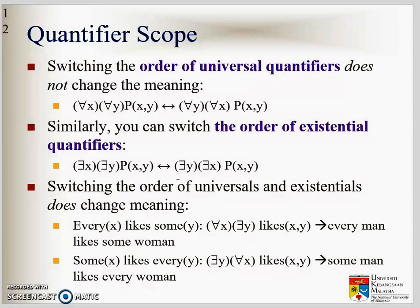Quantifier scope. Switching the order of universal quantifier, you switch the order of all, does not change the meaning. For example, all X and all Y where X likes Y is the same meaning with all Y and all X where X like Y. Because everybody and everybody doesn't change anything. Similarly, you can also switch the order of the existential quantifier. This is some X, some Y and here some Y and some X.